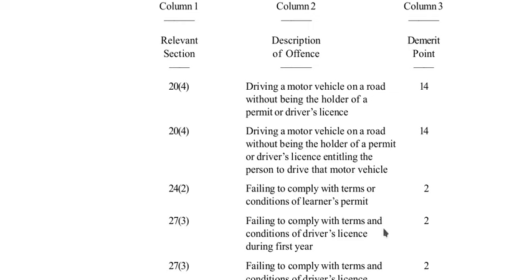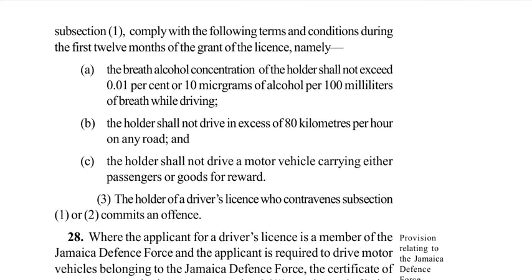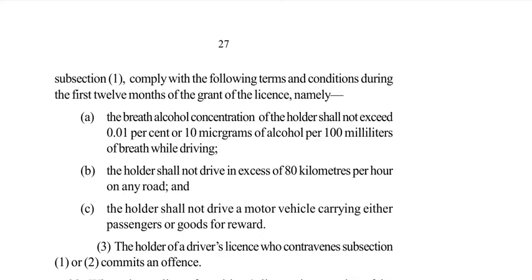The next offense: failing to comply with the terms and conditions of the driver's license during your first year carries 2 demerit points. Section 27 subsection 3 deals with that offense. Section 27 deals with conditions of a driver's license. Subsection 3 states: the holder of a driver's license who contravenes subsection 1 or 2 commits an offense.